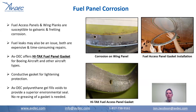Next, I want to talk about fuel panel corrosion. Fuel panels and wing planks are susceptible to both galvanic and fretting corrosion. Also, fuel panels might have issues with leaks, which can be an expensive and time-consuming repair. What AVDEC offers is a high-tech fuel panel gasket. It's got AVDEC's high-tech fuel-resistant gel on it, surrounded with an aluminum mesh for conductivity and lightning protection. That polyurethane gel is going to fill the voids and help provide a really good environmental seal. The AVDEC gasket doesn't require any regreasing, and it's available for Boeing aircraft and other aircraft types as well.